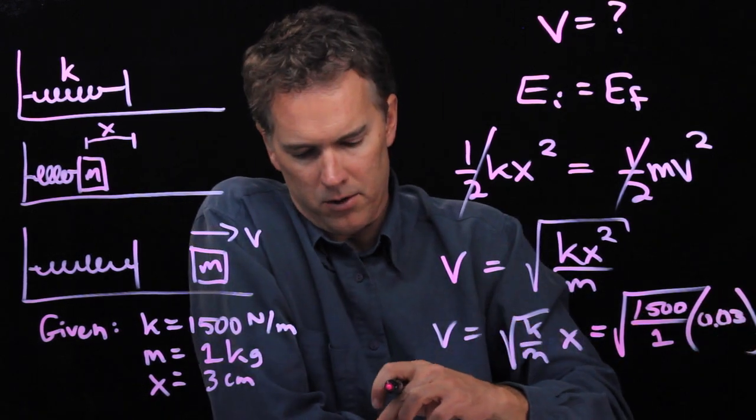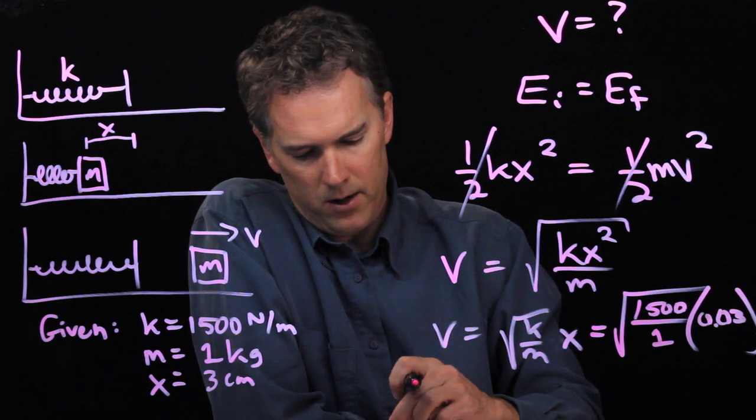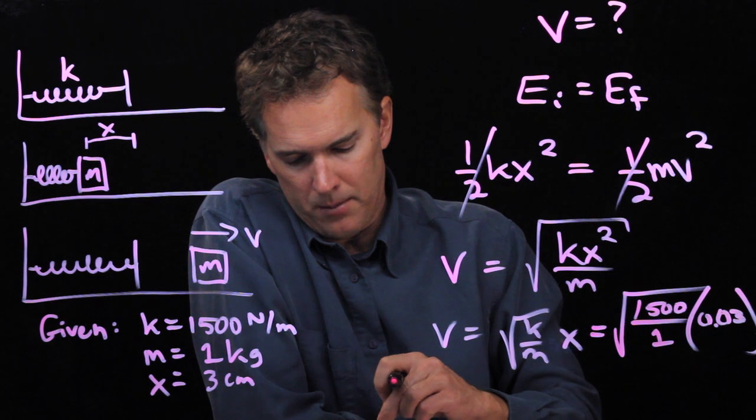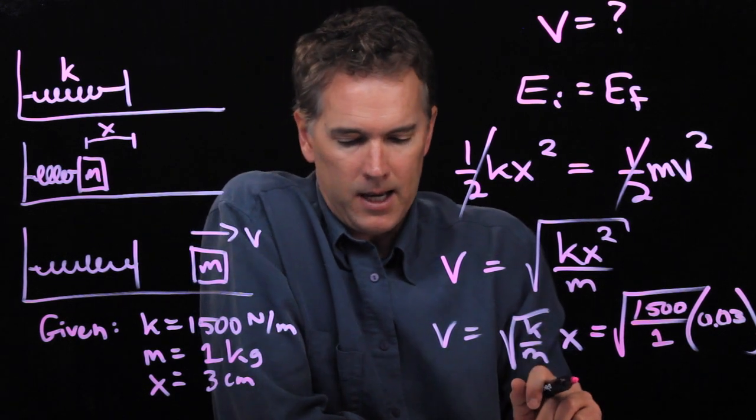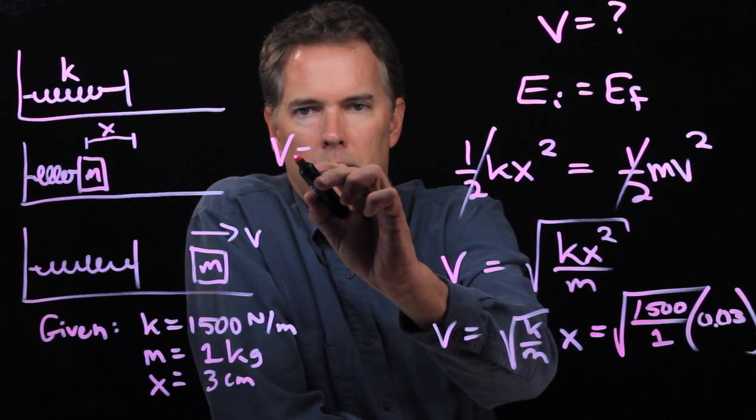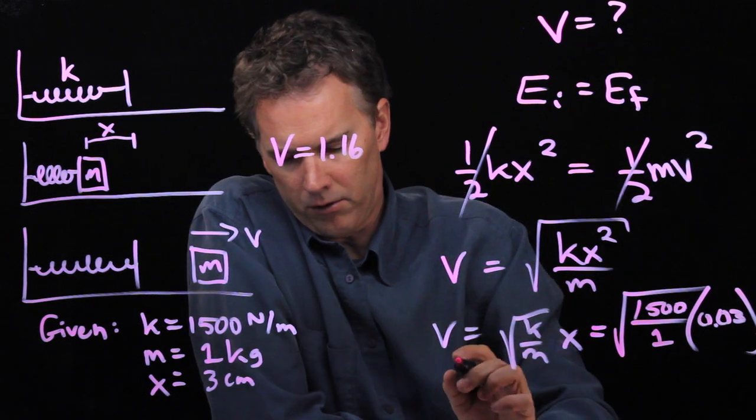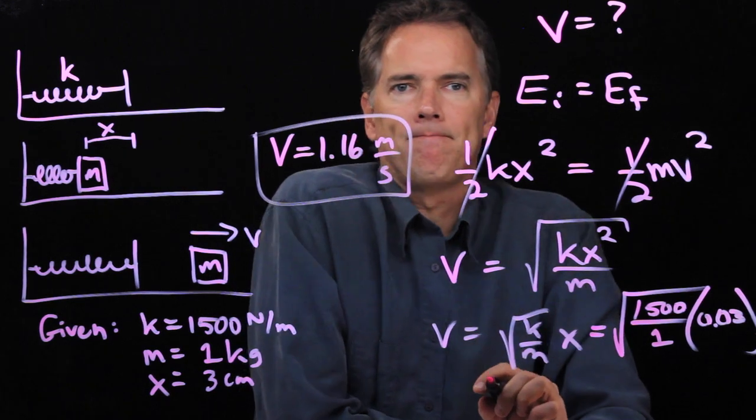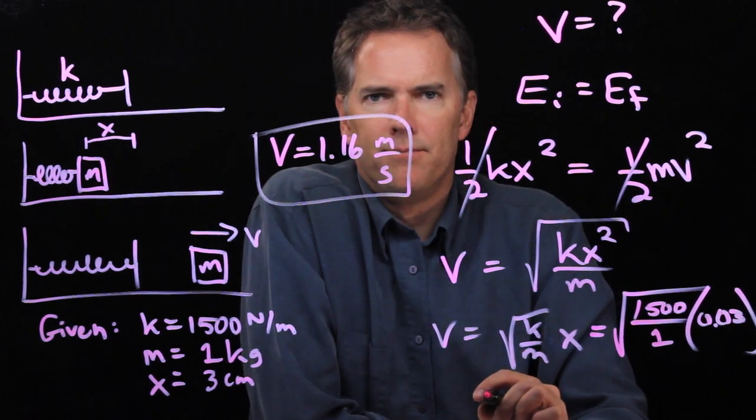And so now you can run this in your calculator. What do we get? Square root of 1500 is 38.7. I'm going to multiply by 0.03 and I get 1.16 meters per second. Okay, hopefully that's clear. Cheers.